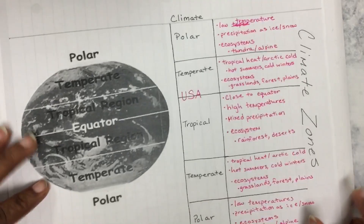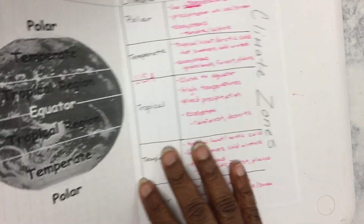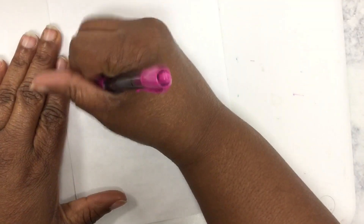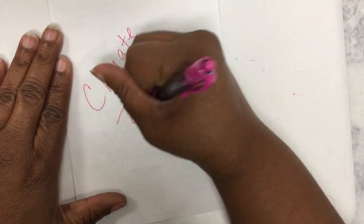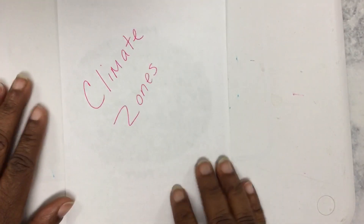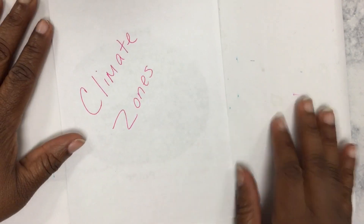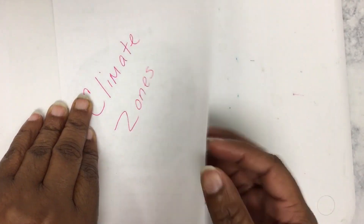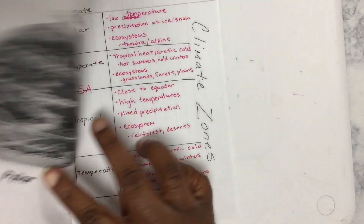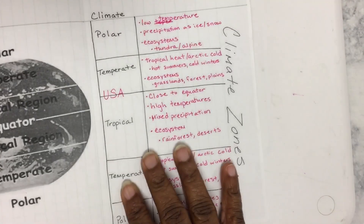When you're done, you're going to take this paper and you're going to fold it in half. You can write 'climate zones' on the front, and glue this in your journal. Make sure you're gluing the side that you did not write your title on. When it's glued in your journal, you should be able to open it up, read about the climate zones, and see the climate zones on the other side.